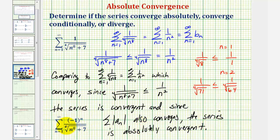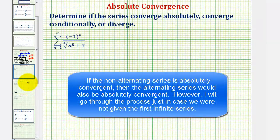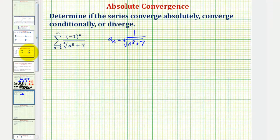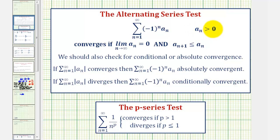Now let's look at the alternating series. Notice that if we take the absolute value of a sub n here, it is the same as the previous series, which we know converges. So if this alternating series converges, it would also be absolutely convergent. To apply the alternating series test, note that the non-alternating part is a sub n equals one divided by the fourth root of n to the eighth plus seven. We need a sub n greater than zero, find the limit as n approaches infinity of a sub n to see if it equals zero, and verify that a sub n plus one is less than or equal to a sub n.